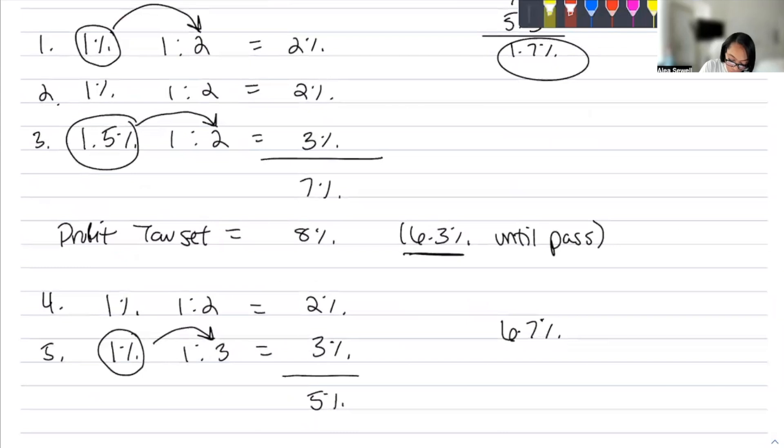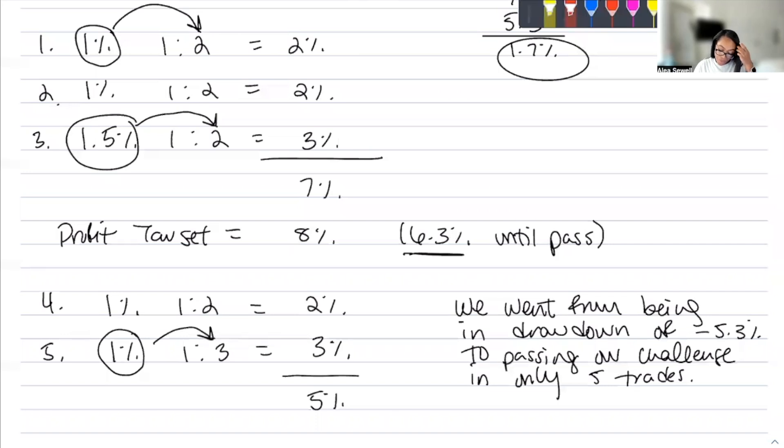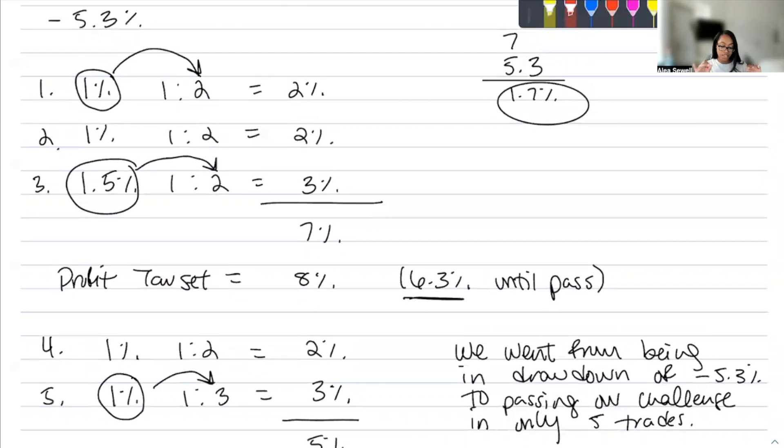We went from, and let me write it out too, so you can clearly see it. We went from being in drawdown of negative 5.3% to passing our challenge in only 5 trades. Imagine that. If you're just patient enough to wait for just simply 5 trades, if you're just patient enough to wait for that A plus setup and just take 5 trades, you can go from negative 5% on your account to passing your account challenge. So this also allows you, when you make a risk management plan, it allows you to have a sense of ease of mind because you're like, I only need 5 trades.